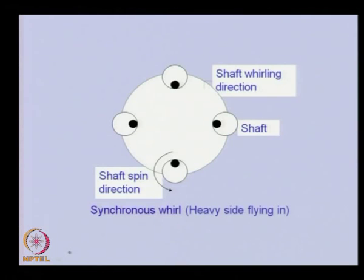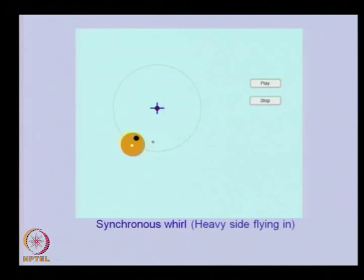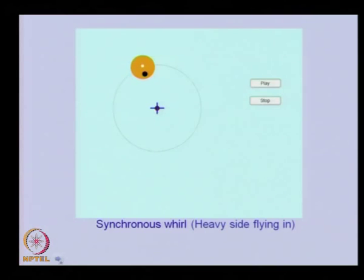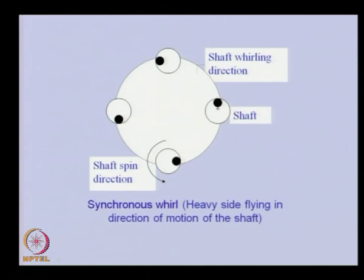Once we cross the critical speed, the heavy side comes inside, and you can see it is always inside during whirling. This animation shows the rotor whirling above the critical speed with the heavy side inside. Because of this, the vibrations will be less since the unbalance force is directed toward the bearing axis. At the critical speed itself, the heavy side is in the direction of motion — tangent to the orbital motion — and large oscillations take place, with response increasing with time. This is a dangerous situation.